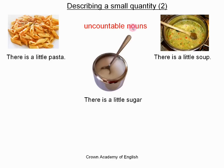Uncountable nouns — we cannot count them. They are not separate objects. Often they are a large mass of something, or they are often a liquid. And they exist only in the singular. That is very, very important.